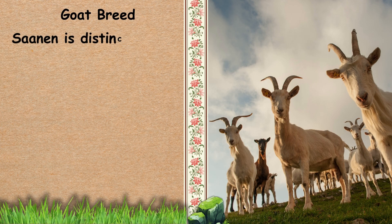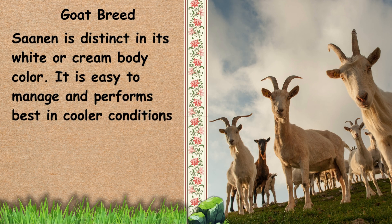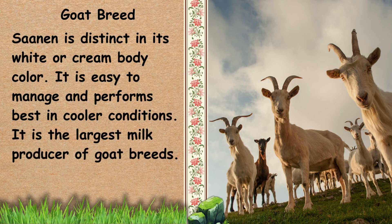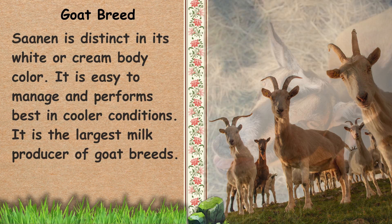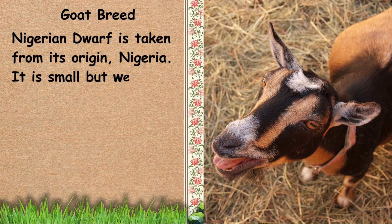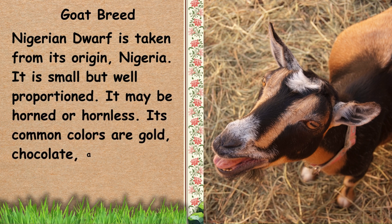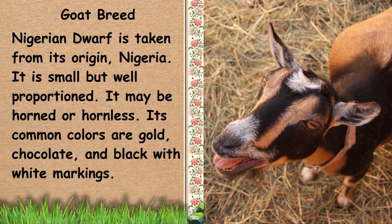Next, we have Saanen. Saanen is distinct in its white or cream body color. It is easy to manage and performs best in cooler conditions. It is the largest milk producer of goat breeds. Next, we have Nigerian Dwarf. Nigerian Dwarf is taken from its origin, Nigeria. It is small but well proportioned. It may be horned or hornless. Its common colors are gold, chocolate, and black with white markings.